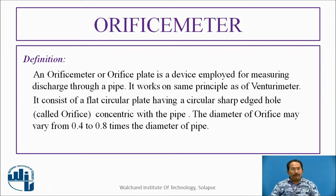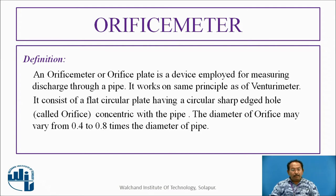An orifice meter, or orifice plate, is a device employed for measuring the discharge. It works on the same principle as the Venturimeter. It consists of a flat circular plate having a circular sharp-edged hole. The diameter of the hole is called the orifice, which is concentric with the pipe. The diameter of the orifice may vary from 0.4 to 0.8 times the diameter of the pipe.